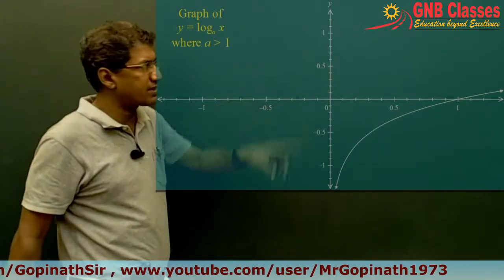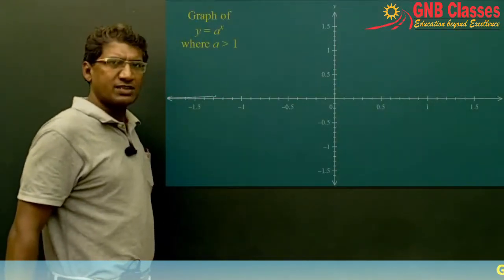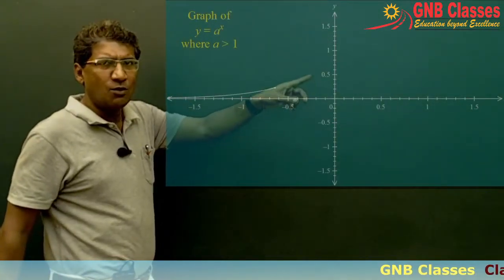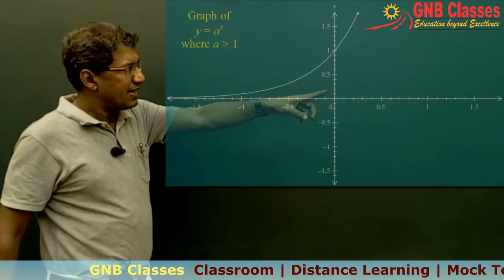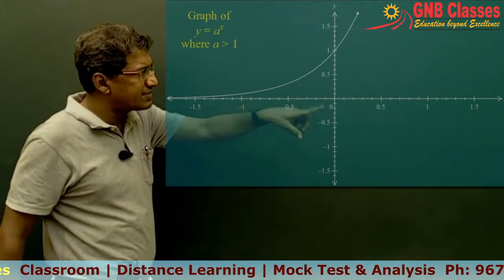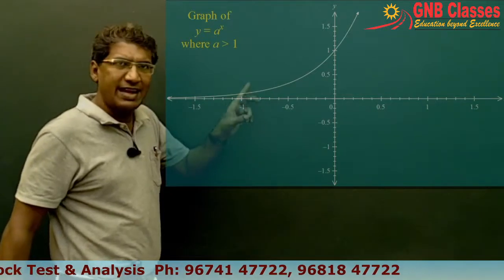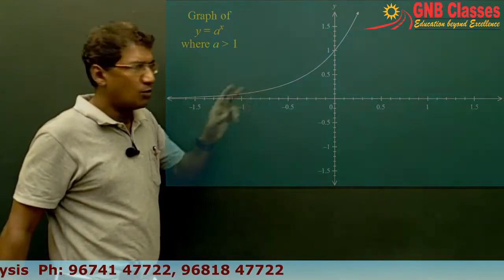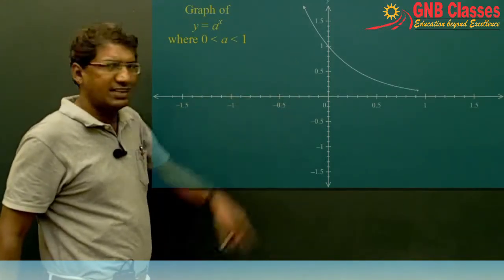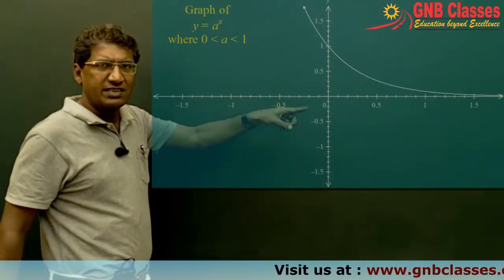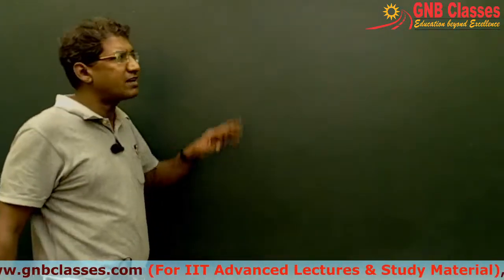The next curve is y = aˣ. When a is greater than 1 the curve is increasing, and your x-axis is the asymptote. When a is between 0 and 1, the curve is decreasing, and again the x-axis is the asymptote. These are the 10 basic curves you have to remember.